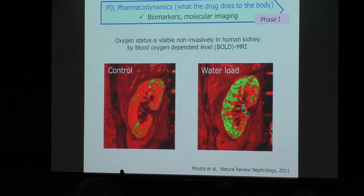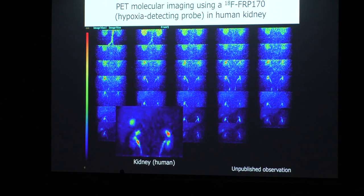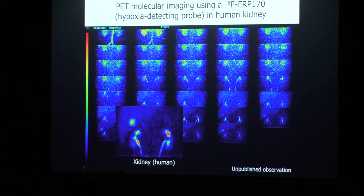Renal oxygen level is now visible by BOLD MRI. This is a collaborative study with Professors Kiyomoto and Mori, who are present in this room. A healthy subject given one liter of plain water shows a dramatic increase of renal oxygen levels in the kidney — this is the oxygen level, not blood flow. So your kidney doctor recommends drinking much water every day to protect your kidney. Our radiolabeled non-toxic probe FRP-170, developed by the Tokyo University team, is a more sophisticated approach. This probe, taken up by hypoxic cells and combined with PET molecular imaging, visually assesses in humans the degree of tissue hypoxia.